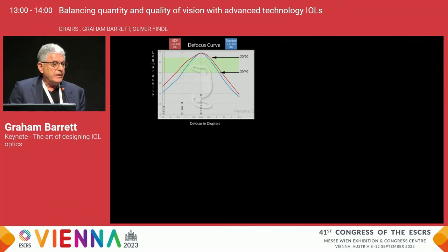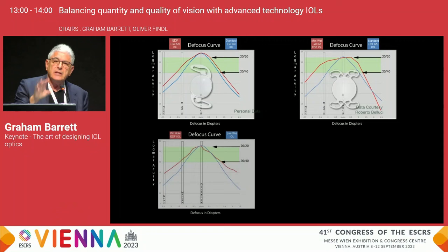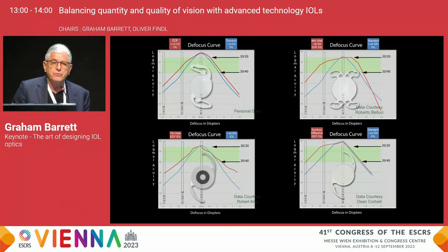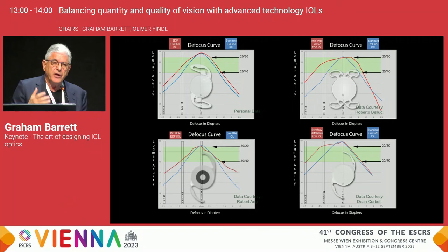Today, if you look at the defocus curve, extended depth of focus or enhanced monofocals are not a homogeneous group. You can't say that extended depth of focus lenses are all the same — they're not. The impact of the optic on dysphotopsia and the ability to combine myopic defocus is not the same depending on the different type of optic that provides that extended depth of focus.